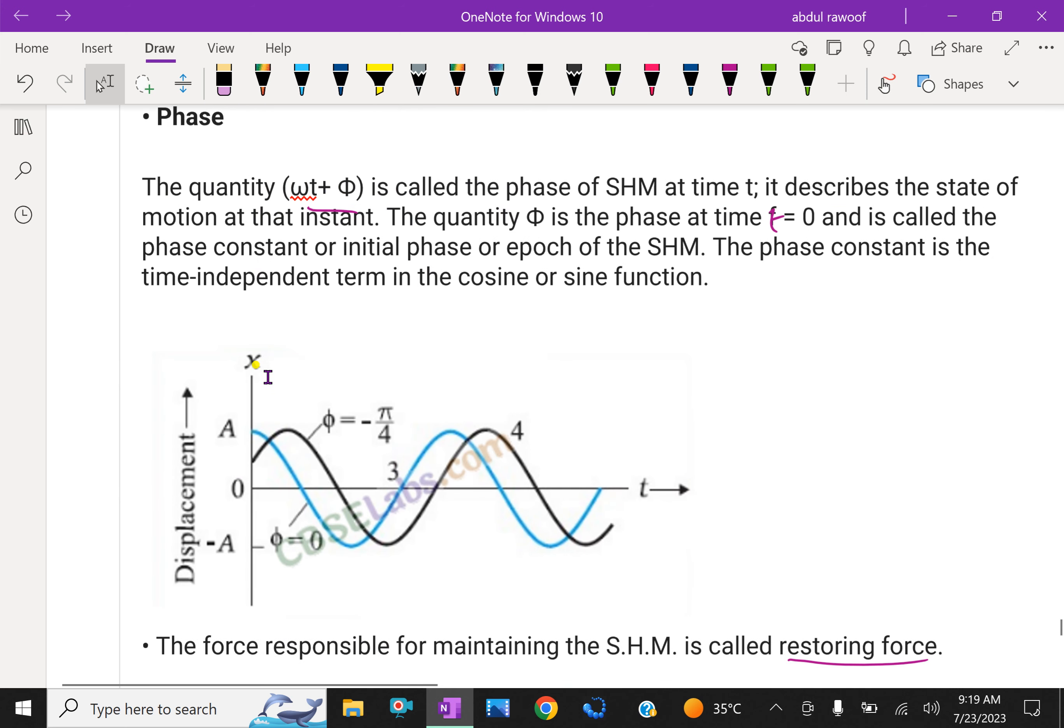Phase: The quantity ωt + φ is called the phase of SHM at time t. It describes the state of motion at the instant. The quantity φ is the phase at time t = 0 and is called the phase constant, initial phase, or epoch of the SHM. The phase constant is the time-independent term of the cosine or sine function. Time will not affect the phase angle.